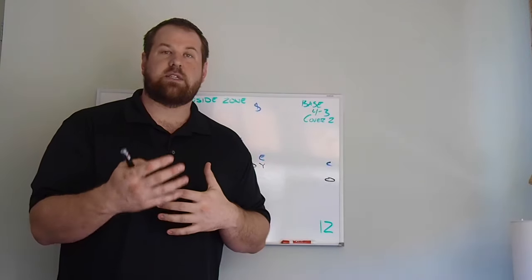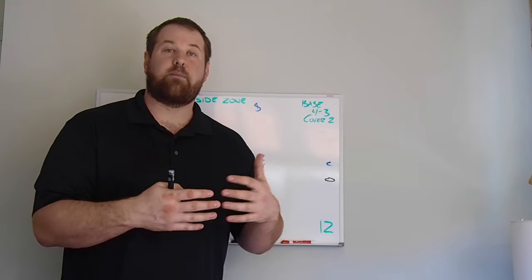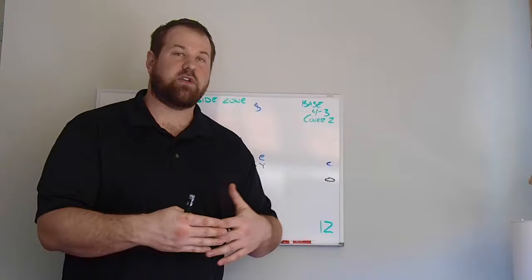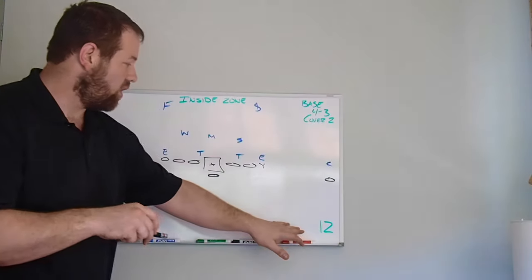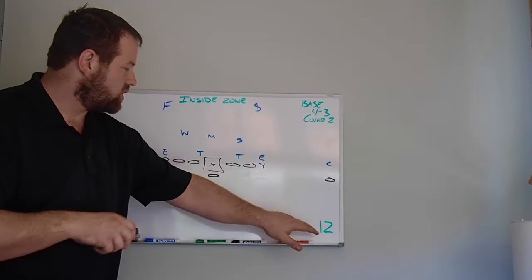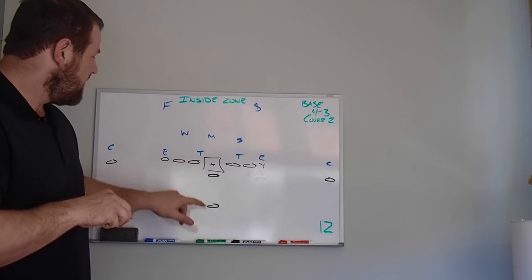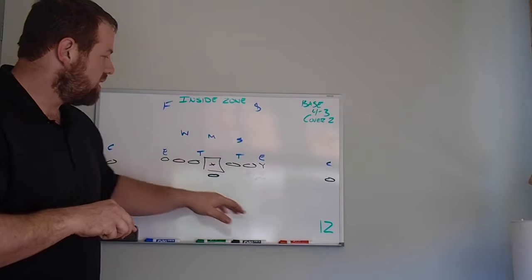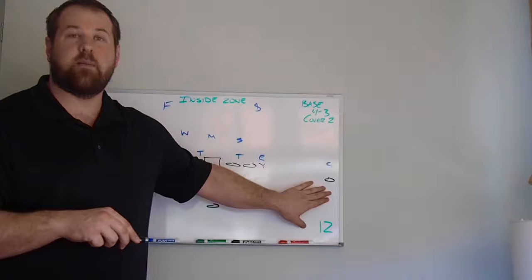Then we get into the personnel. What is the offensive personnel on the field? The numbering system always starts with the running back first, then the tight end. So here, you can see in the lower right hand corner, we'll have it right here. This is 12 personnel because we have one running back and two tight ends in the game right here, hence 12 personnel. So this will always be on the board for you to see.